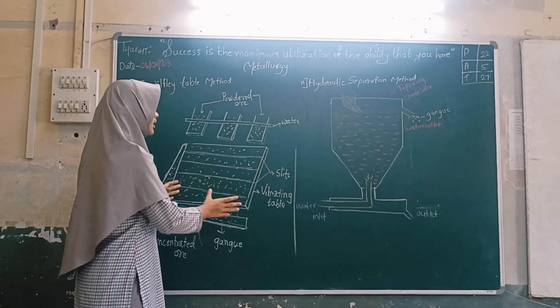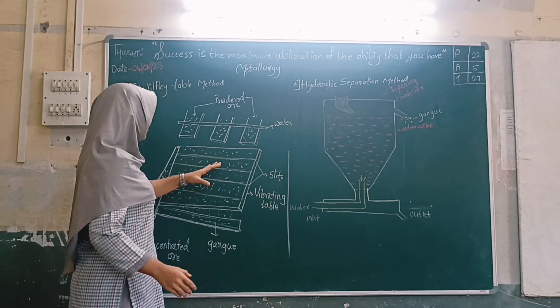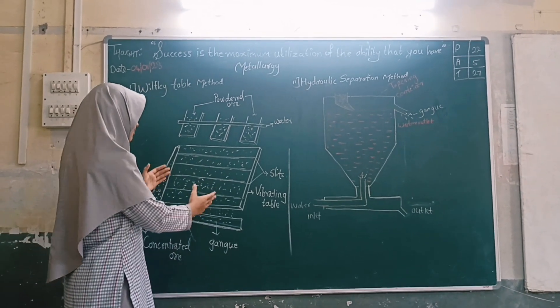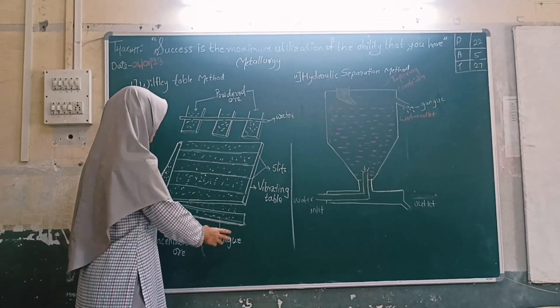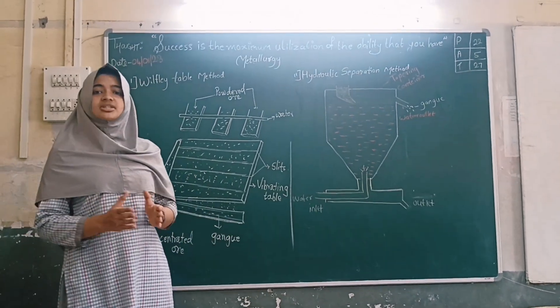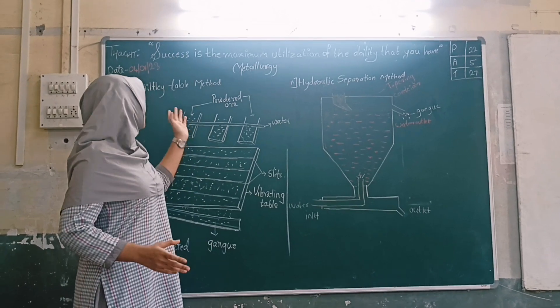Then as the table is vibrating, the metal particles will get collected into this pipe. And gangue particles will flow away. So this is how metals can be separated using a Wilfley table.